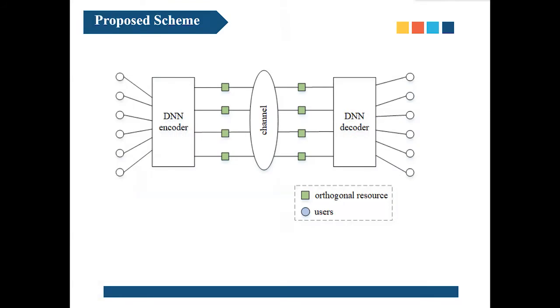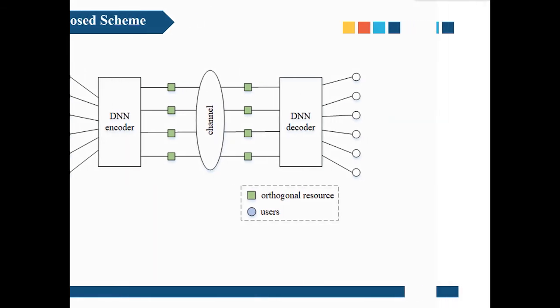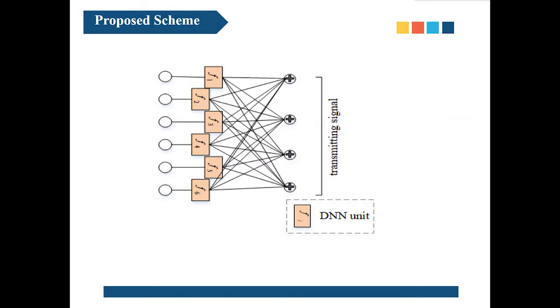The structure of DNN NOMA is shown in this picture. The encoder consists of multiple DNN units and each DNN unit is connected to a user. The data from users are encoded in the encoder and transmitted on the orthogonal resources. And the decoder reconstructs them according to the received signal. The structure of DNN encoder is shown in this figure. The encoder consists of multiple DNN units and each DNN unit is connected to a user. User data is encoded by the DNN unit connected to it.